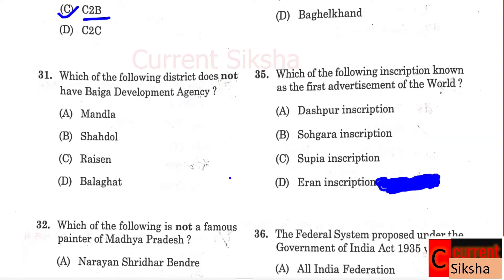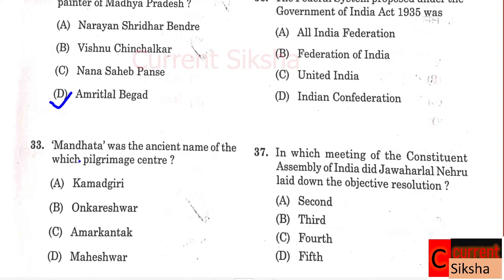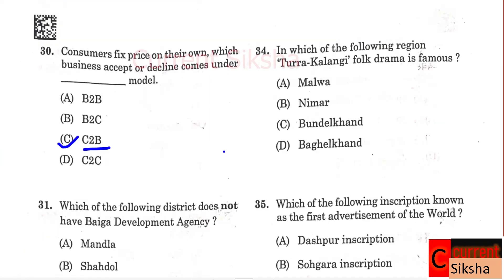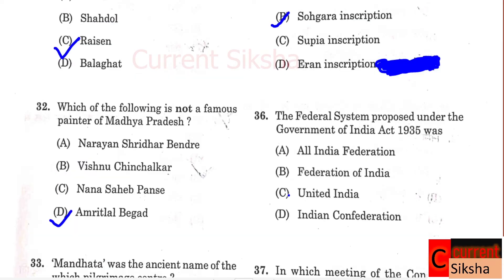Question 31: Which of the following districts doesn't have Baiga Development Agency? Correct option C - Rajshri. Question 32: Which of the following is not a famous painter of Madhya Pradesh? Correct option D - Amrit Lal Begar. Question 33: Mandhata was the ancient name of which pilgrimage center? Correct option B - Omkareshwar. Question 34: In which region is Tura Kalangi folk dance/drama famous? Correct option B - Nimar. Question 35: Which of the following inscription is known as the first advertisement of the world? Correct option B - Shogara inscription.